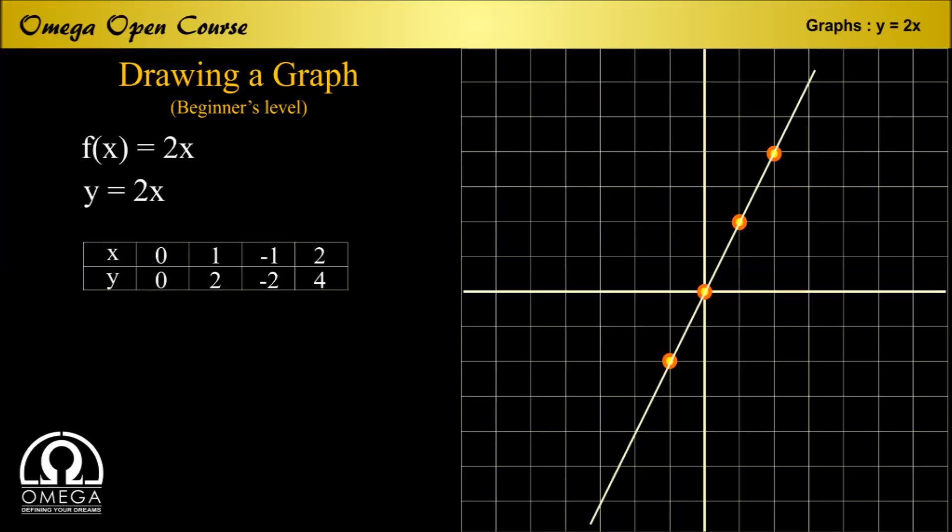To draw a straight line we need only 2 points, so we could have obtained our graph by plotting just 2 coordinates.